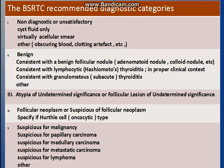According to it, the system is divided into 6 categories. The first category is non-diagnostic or unsatisfactory smears. If we aspirate only cyst fluid, or the smear is virtually acellular, or other obscuring blood or clotting artifacts are seen, it is non-diagnostic.